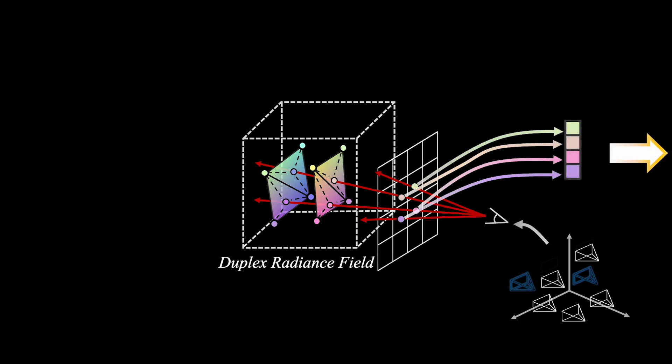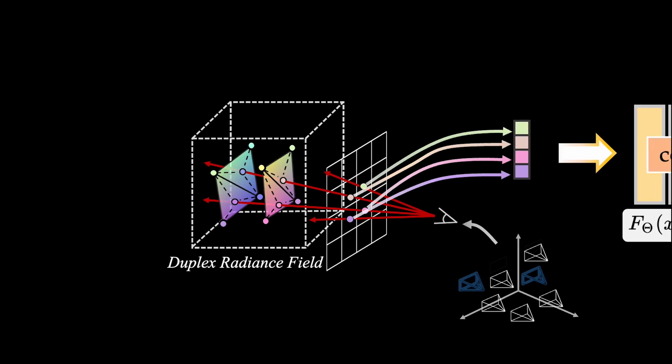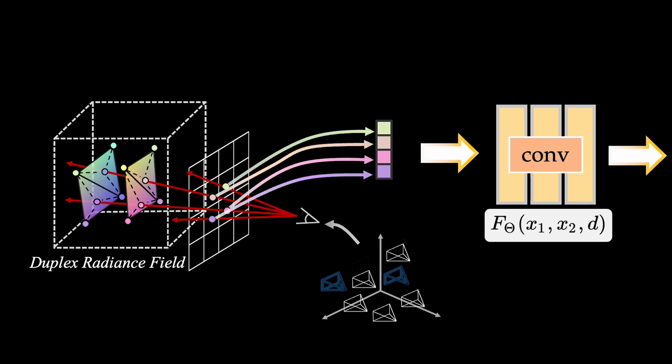To generate view-dependent colors, most NeRF methods rely on MLPs, which we find not suitable in our case due to the missing constraints of volume rendering.